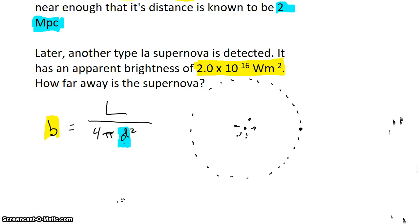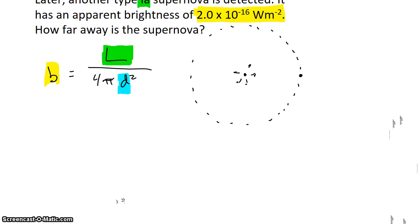The key here is to recognize that for a type 1a supernova, the luminosity of the supernova is always the same. So the luminosity of the first supernova is going to be exactly the same as the luminosity of the second supernova.